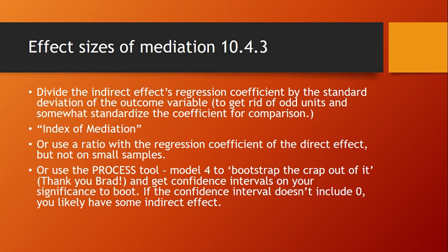If you don't want to do it by hand, use the PROCESS tool — it's Model 4 to get mediation, whereas models 1, 2, and 3 did moderation. Model 4's objective is to bootstrap your data extensively and give you confidence intervals on your significance as well. If the confidence interval does not include zero, then you likely have some indirect effect through that route.